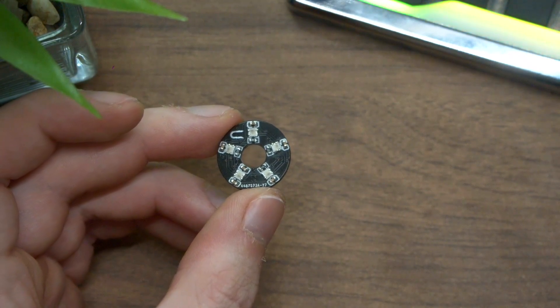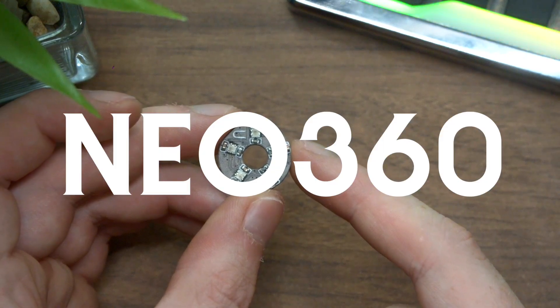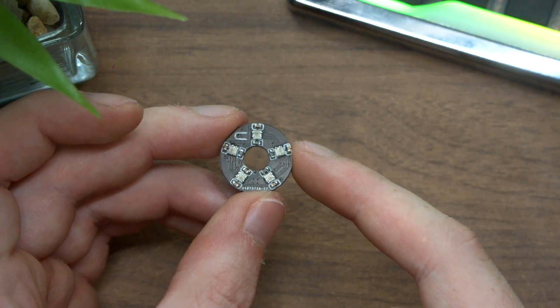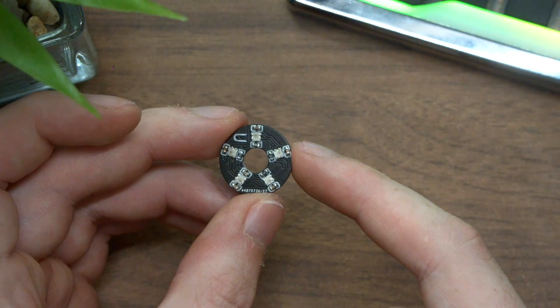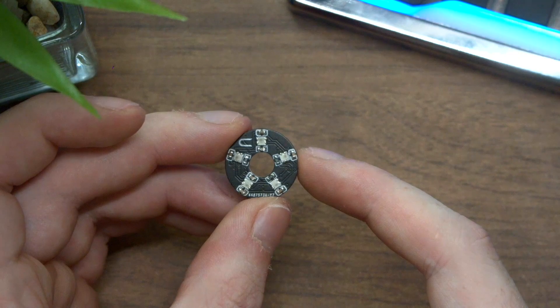Alright, what's going on everyone, welcome back to the workshop. What I have for you today is the Neo 360, a little circuit board that I've been working on with a few friends of mine. What it essentially does is something I've not really seen done before.